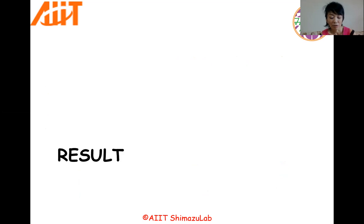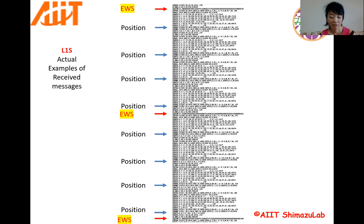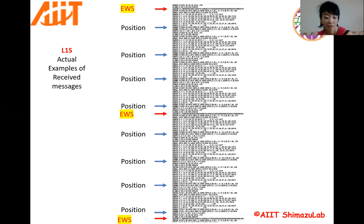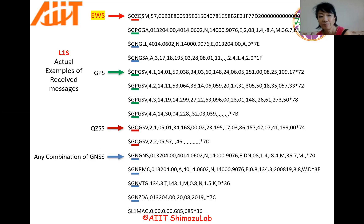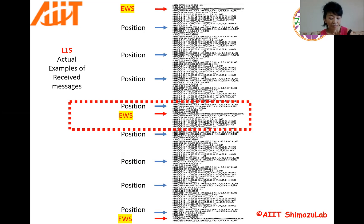Next step is transforming the data to digital code for 122 bits. I would like to explain a small part of our test result. We received the Common EWS messages among the positioning data successfully. We can see which information EWS has versus positioning data by seeing the first code of each record. We can see the exact time of EWS message receiving.